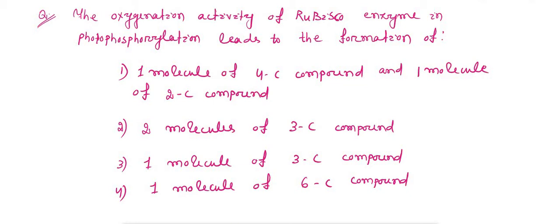Hello, the question I have written here: the oxygenation activity of RuBisCO enzyme in photophosphorylation leads to formation of what? RuBisCO enzyme activity in oxygenation during photophosphorylation leads to formation of which product? Okay, we need to know what is photophosphorylation first.